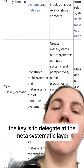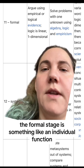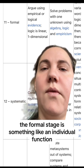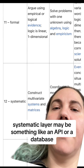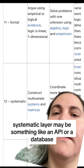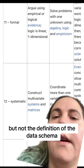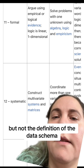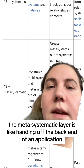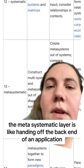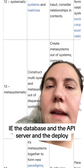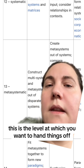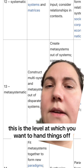The key is to delegate at the metasystematic layer. The formal stage is something like an individual function. The systematic layer may be something like an API or a database, but not both — and not the definition of the data schema. The metasystematic layer is like handing off the back end of an application, i.e. the database and the API server and the deploy. This is the level at which you want to hand things off.